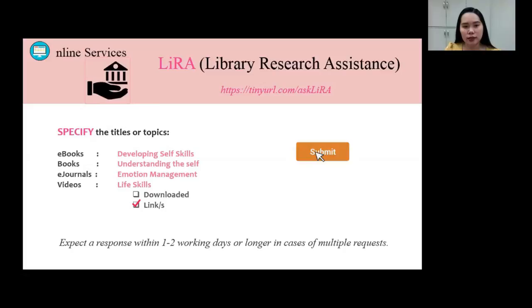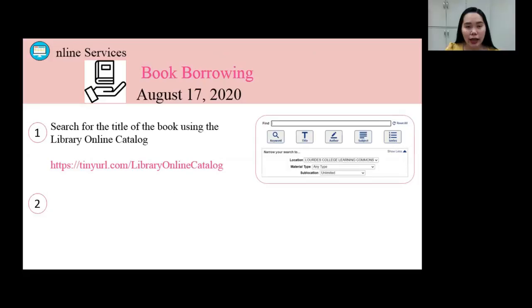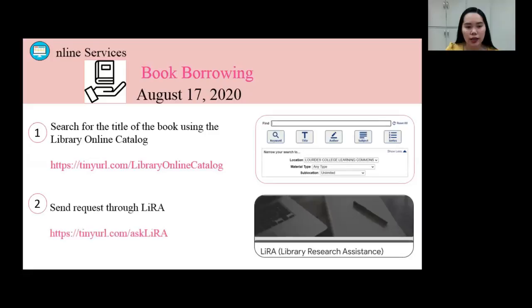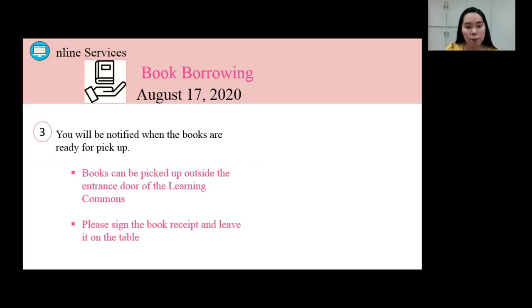Book borrowing for students will start on August 17th. Here's how: First, you need to search for the title of the book using the library online catalog. Second, send a request through Lira. Third, you will be notified when the books are ready for pick-up. Books can be picked up outside the entrance door of the Learning Commons, and you will be asked to sign the book receipt and leave it on the table. The receipt indicates your name, the titles of the book, and its due date.